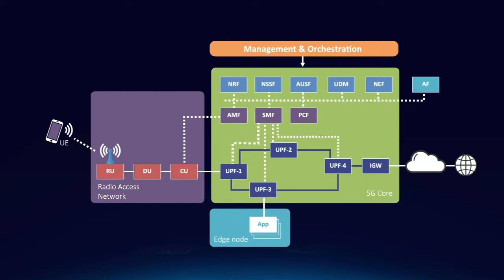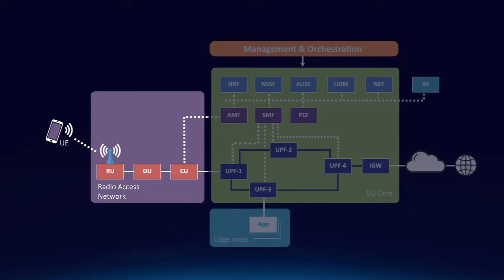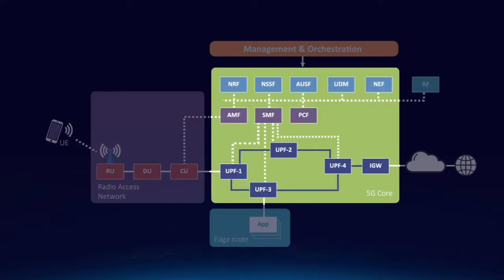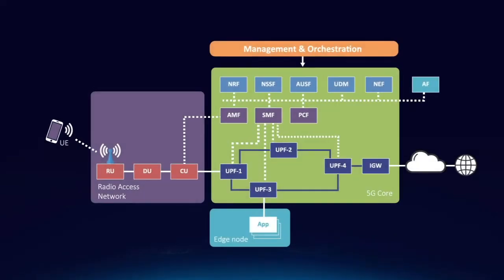We can identify four main domains: the 5G radio access network, the edge network, the 5G core, and management and orchestration. An overview of these components is presented next.